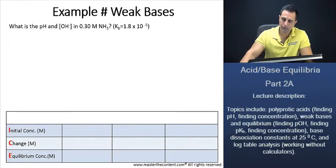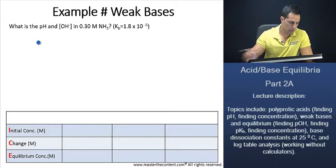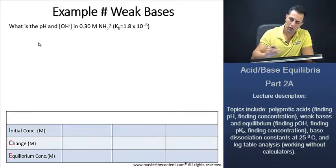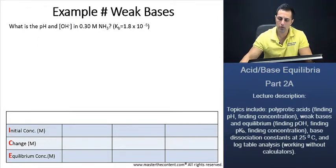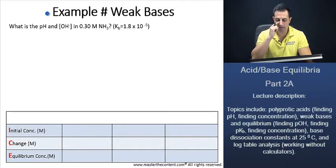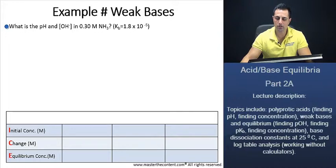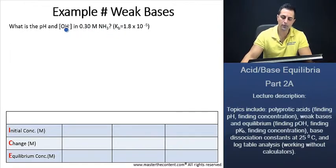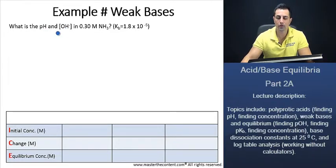Now we're going to do an example of weak bases here. With this weak base, they're asking us, what is the pH and the OH concentration in a 0.3 molar ammonia solution? And the base dissociation constant is given to us. We can find the pH from the hydroxide ion concentration.